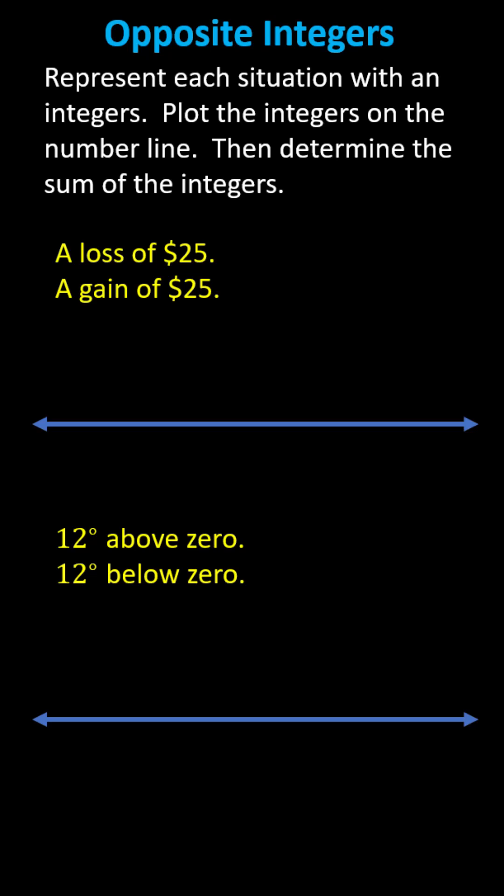Represent each situation with an integer, plot the integers on the number line, then determine the sum of the integers. For the first example, we have a loss of $25 and a gain of $25. For a loss of $25, we use the integer negative 25.